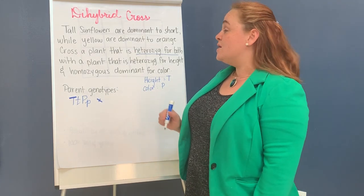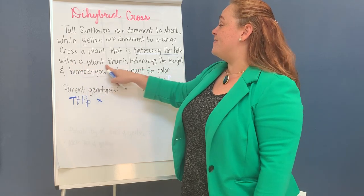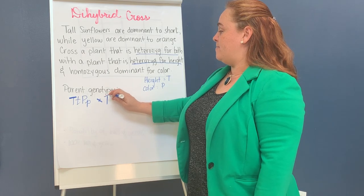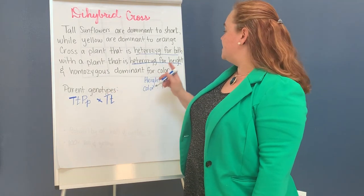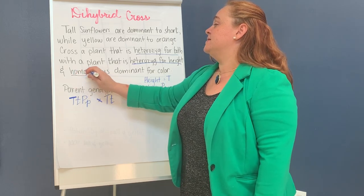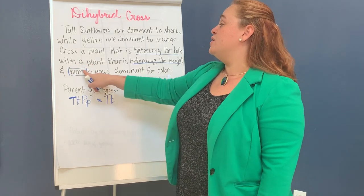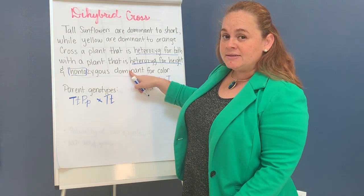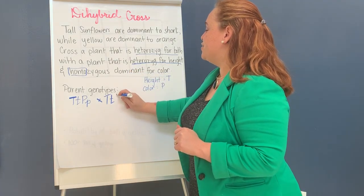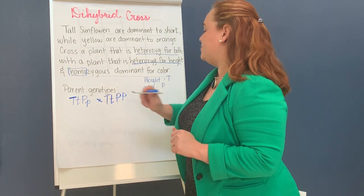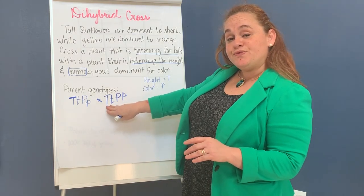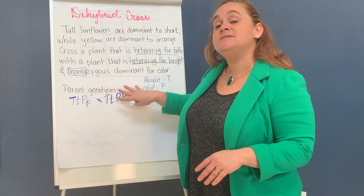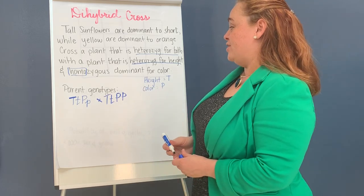We're crossing parent one with parent two. Parent two is heterozygous for height, so that's the mix. And homozygous — homo meaning 'the same' — homozygous dominant for color. Dominant means capital letters, so parent two is capital T lowercase t, and capital P capital P.